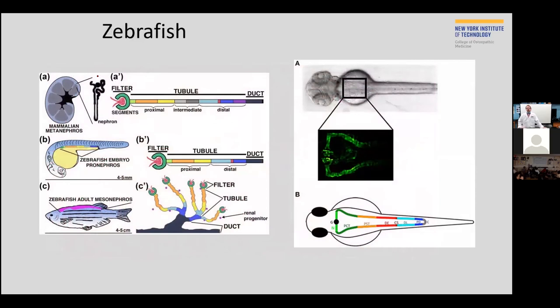I also use zebrafish. So fish have kidneys, they don't look like our kidneys, but they have lots and lots of tubes. They're structured the same way, so they have a glomerulus and they have different parts of their tube just like us. So I can study zebrafish and learn a lot about our kidney, too.